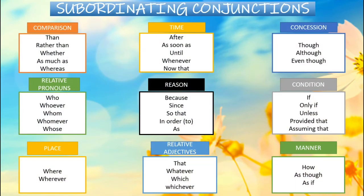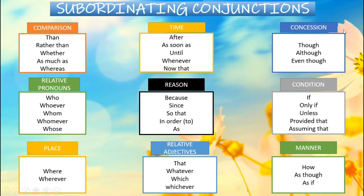The subordinating conjunctions are divided into various categories. Some describe comparison: THAN, RATHER THAN, WHETHER, AS MUCH AS, WHEREAS. Some describe time: AFTER, AS SOON AS, UNTIL, WHENEVER, NOW THAT. Next comes concession — conjunctions used in daily speech such as THOUGH, ALTHOUGH, and EVEN THOUGH.